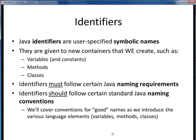Identifiers in Java are user-created symbolic names. These are the names that we get to give to things we create in Java programs, such as variables, methods, and classes — the three main container types we discussed in the last video lecture.